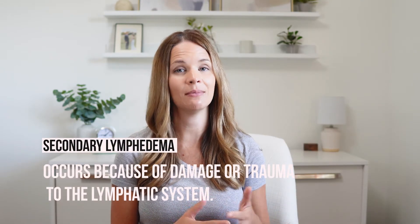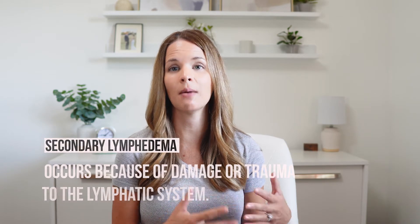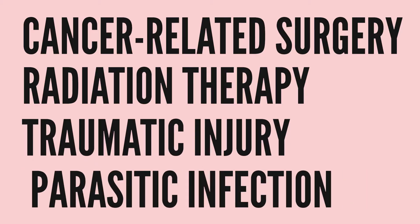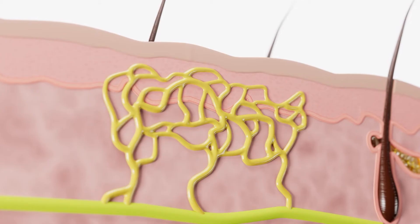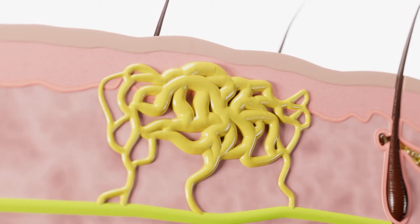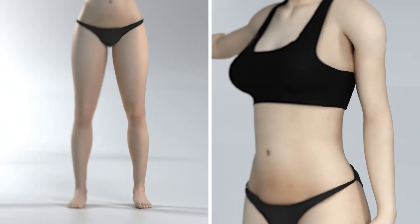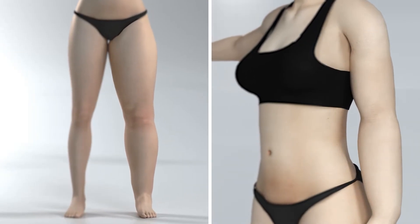Secondary lymphedema occurs because of damage or trauma to the lymphatic system. Common causes of lymphatic system damage may include cancer-related surgery, radiation therapy, traumatic injuries, or parasitic infections. Specific cancer-related surgeries, such as those done for tumor removal, require the removal of lymph nodes, which reduces the system's ability to move fluid and puts people at risk for developing lymphedema. In the case of radiation, it can damage healthy lymph nodes, causing scarring or fibrosis, which can then affect lymphatic flow.